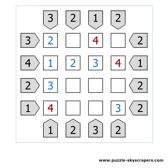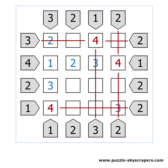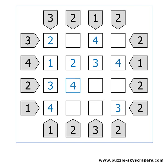Each number should participate only once in each row and column. Check out the 4s. We have a 4 on the first, the second, and the last row, and on the first, the third, and the last column. The last 4 should be placed here.